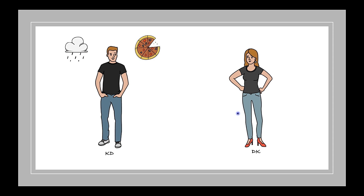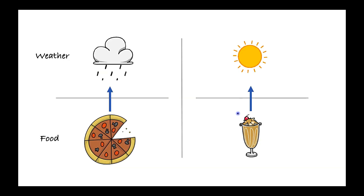So now DK has only two choices to consider: when it's a hot day, Katie will ask for ice cream, and when it's a rainy day, Katie will mostly ask for pizza. However, it was never easy for DK to understand Katie, as there are a couple of scenarios when Katie does not follow this pattern — but DK found these are mostly exceptions.